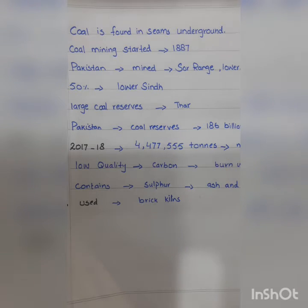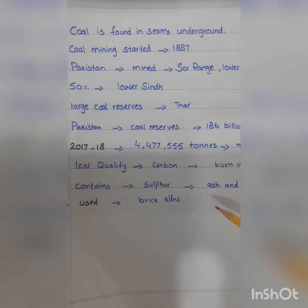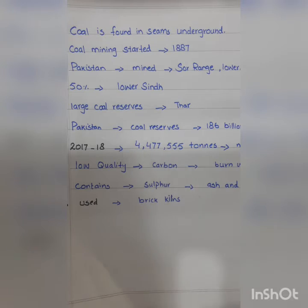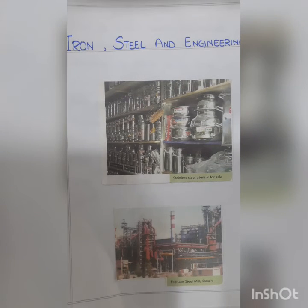Pakistan has coal reserves of about 186 billion tons. Unfortunately, the coal found in Pakistan is of low quality — it does not have a lot of carbon. It contains a lot of sulphur and produces a lot of ash and smoke when burned. It is used only in brick kilns.